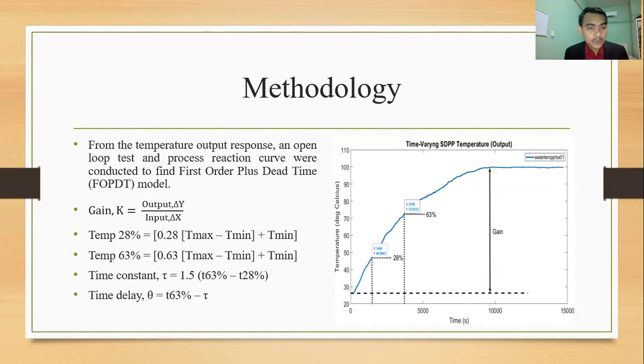So we need to find the value of gain. Gain is equal to output divided by input. So for the output, the highest temperature will be minus with the lowest temperature, divided by the highest value of input minus with the lowest value of input.